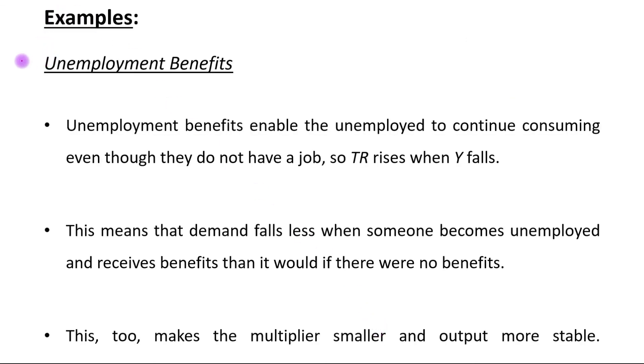Second example: unemployment benefits. Unemployment benefits enable the unemployed to continue consuming even though they do not have a job, so transfer payment rises when output falls. This means that demand falls less when someone becomes unemployed and receives benefits than it would if there were no benefits. This too makes the multiplier smaller and output more stable. Thank you.